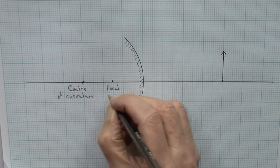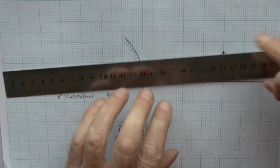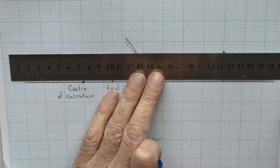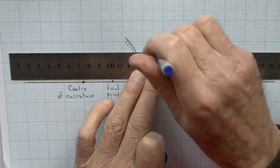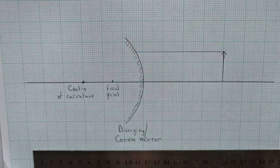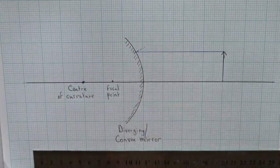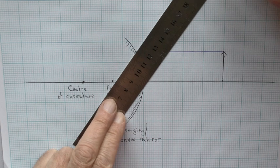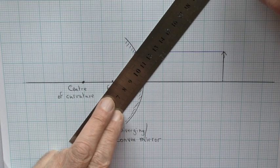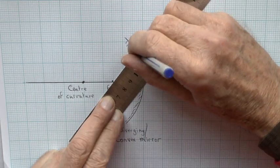We'll first draw in a ray of light from the top of the object parallel to the principal axis, striking the mirror. It will reflect off as if it is coming from the focal point, obeying the law of reflection—the angle of incidence and the angle of reflection being the same.